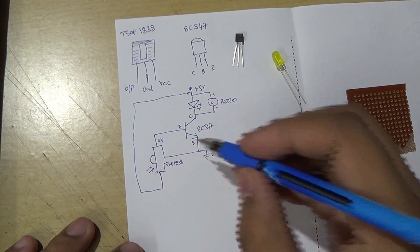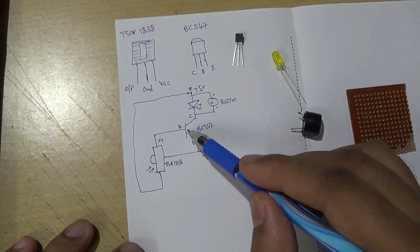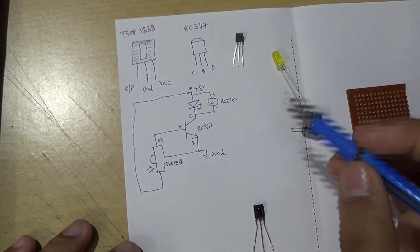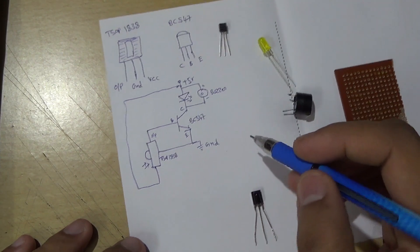When IR rays are present, the output is low. So the transistor will not switch on and the buzzer will not give any alarm.